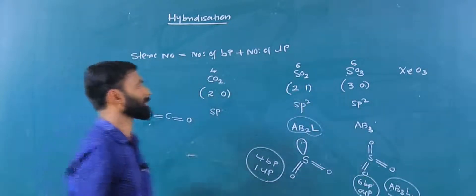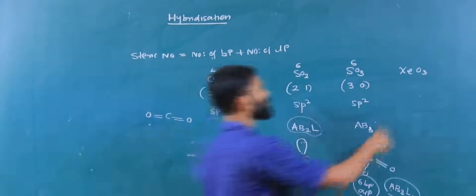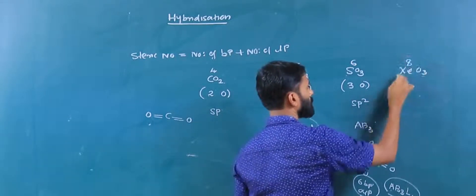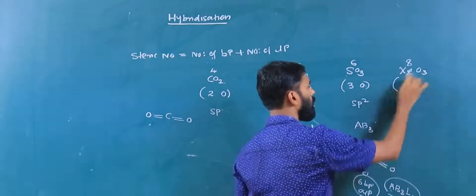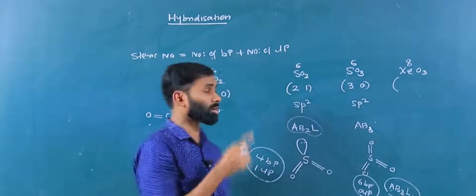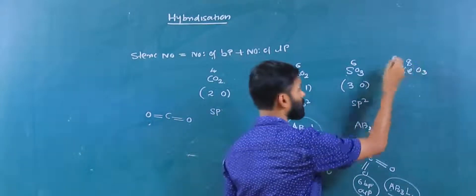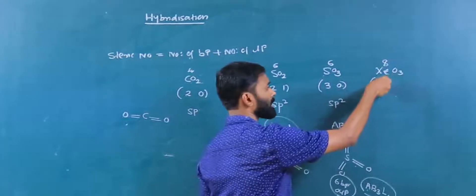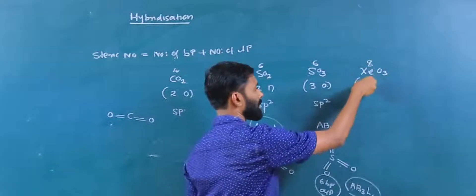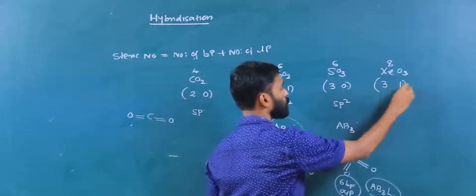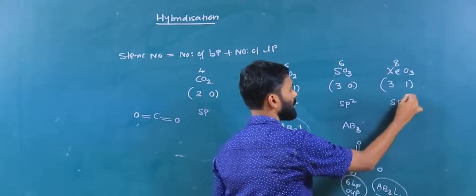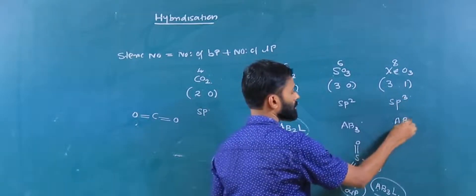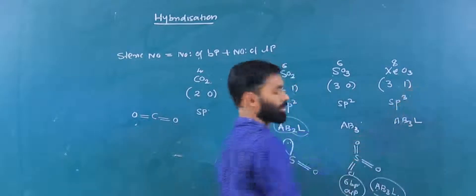Now XeO3 — xenon trioxide. Xenon is group 18. Valence electrons: 8. Oxygen forms 3 bonds. Calculation: 8 minus 6 equals 2, divided by 2 equals 1 lone pair. Hybridization is SP3. Molecule type is AB3L.